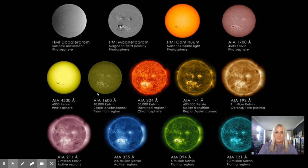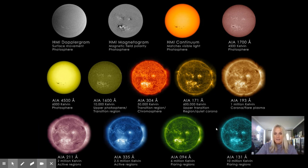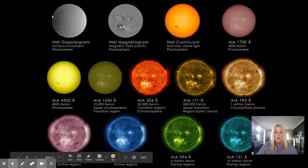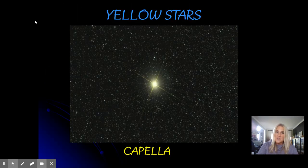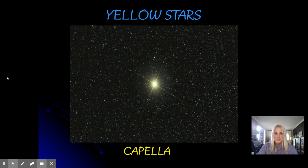There are a couple of space satellites going around taking images of the sun all the time. They can screen out all the different wavelengths of light and produce each of the images you see here. The one we always see from Earth is an image of the photosphere, and we see a yellowish color because of the atmosphere and the way light waves bend. Some stars actually can be yellow — Capella is a star in our sky right now that appears a pure yellow color.